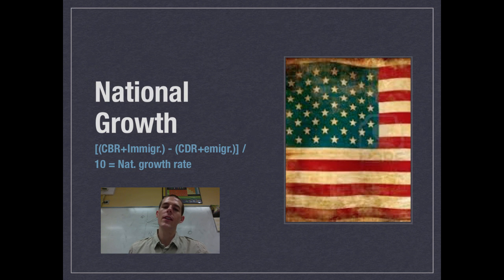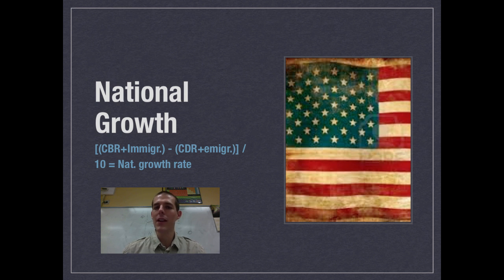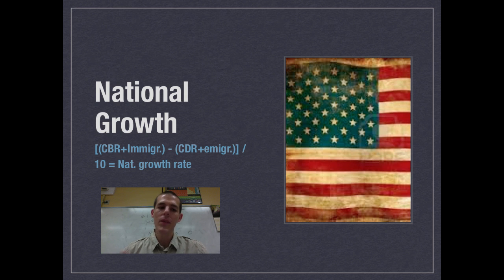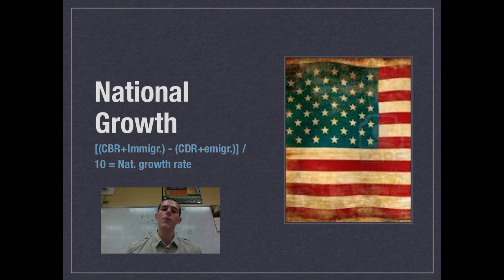If we want to take it to the national scale, we have to add a couple more figures, because people immigrate in and out of countries all the time. When talking about global growth, we don't worry about people leaving the planet, but for a national growth rate you have to account for migration. The national growth rate calculation is: crude birth rate plus immigration (with an 'I') minus crude death rate minus emigration (with an 'E'), all divided by 10. That gives the percentage growth for whatever nation you are calculating.